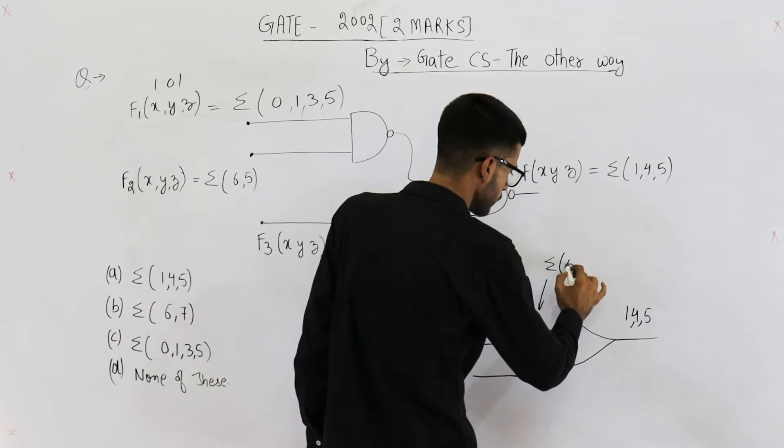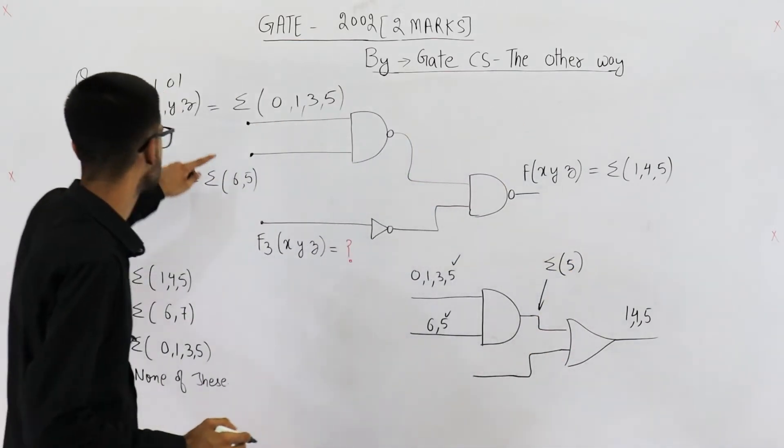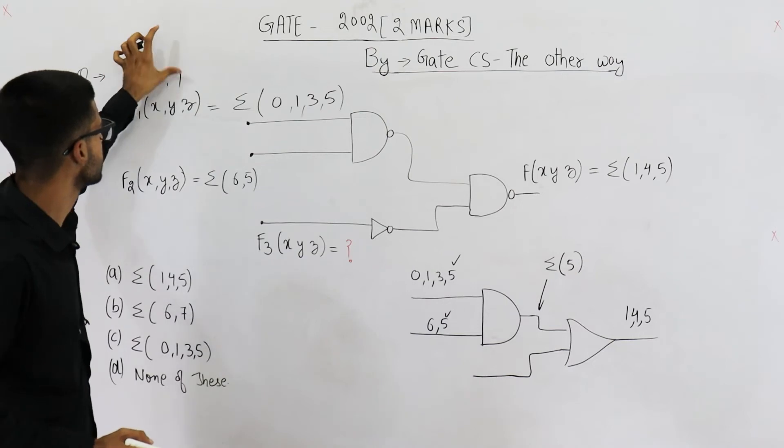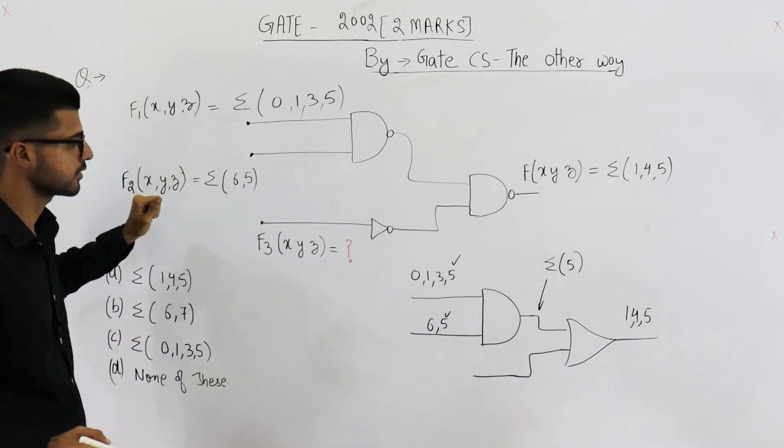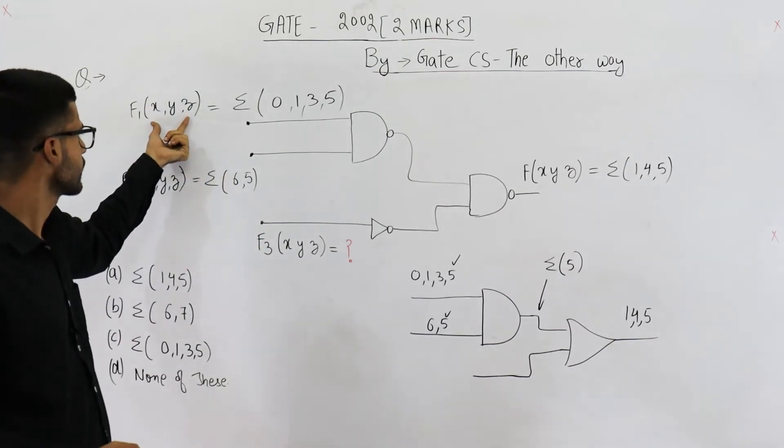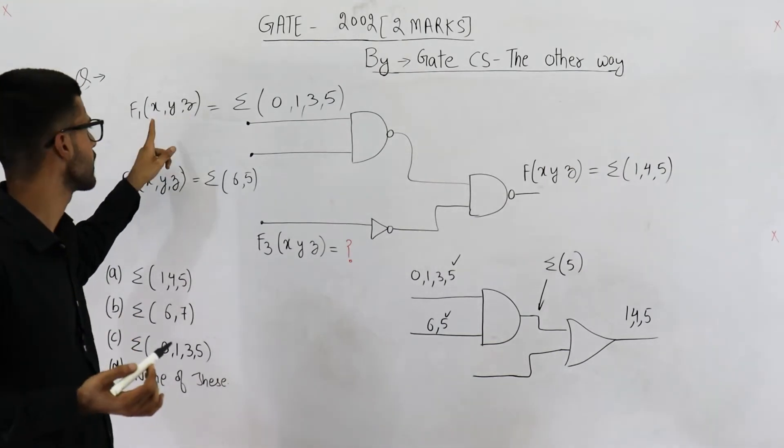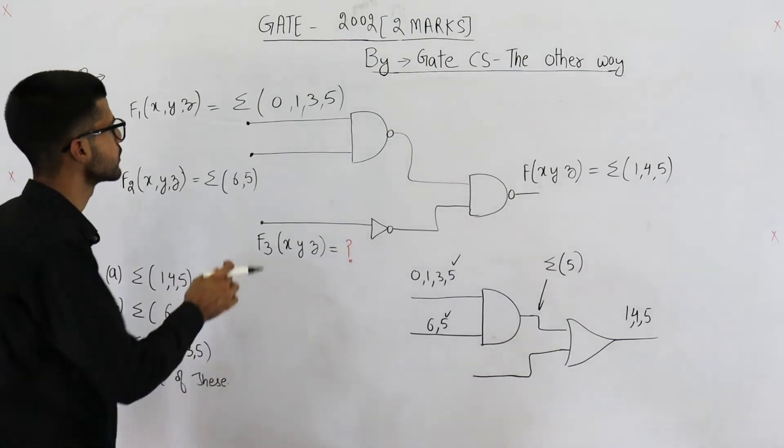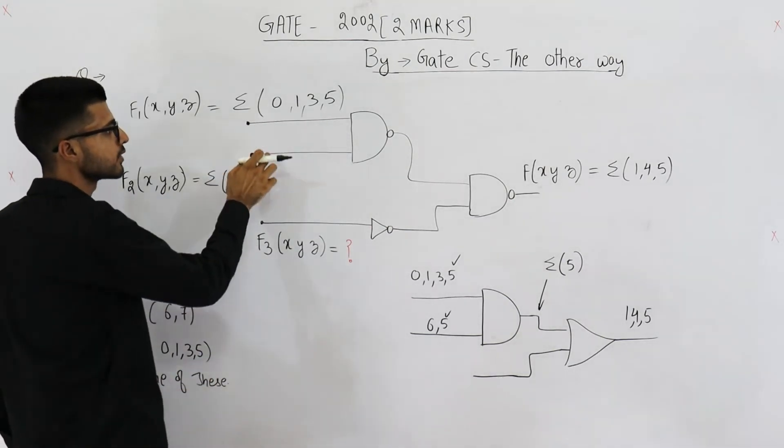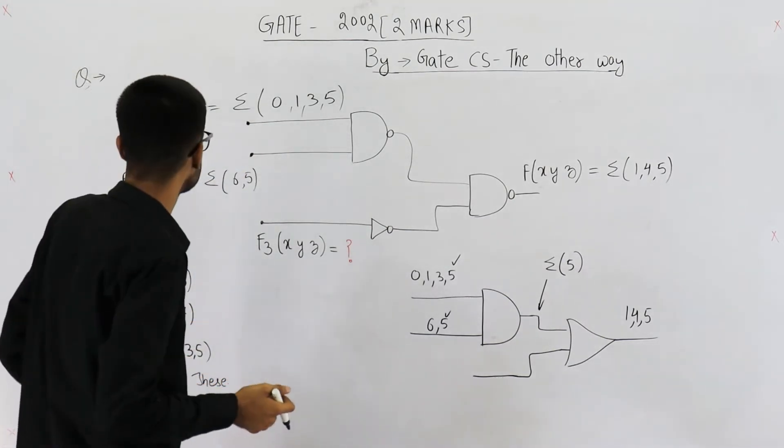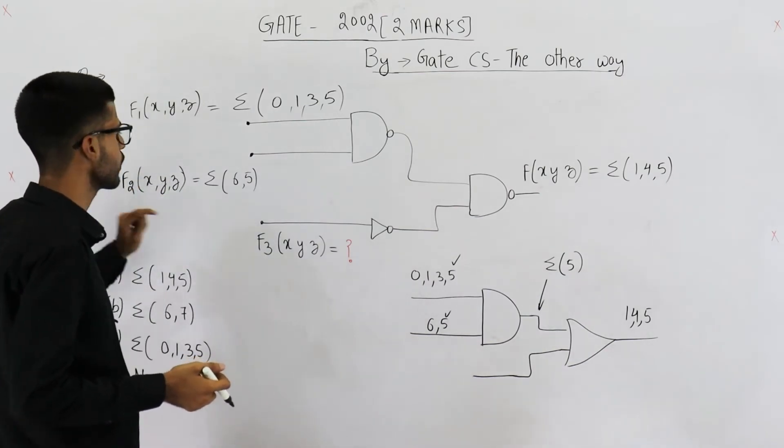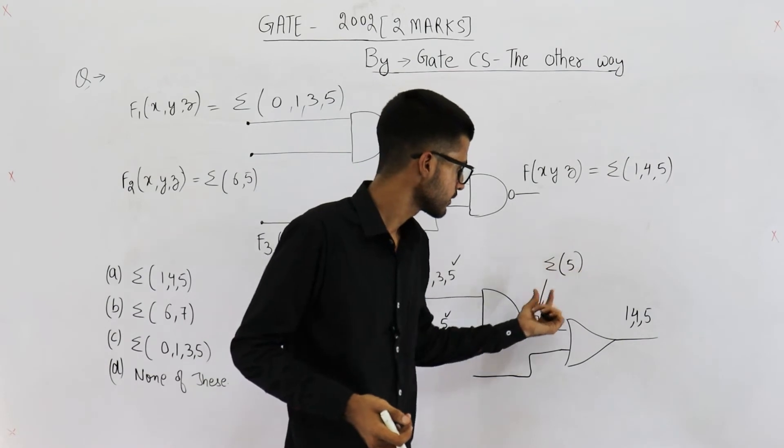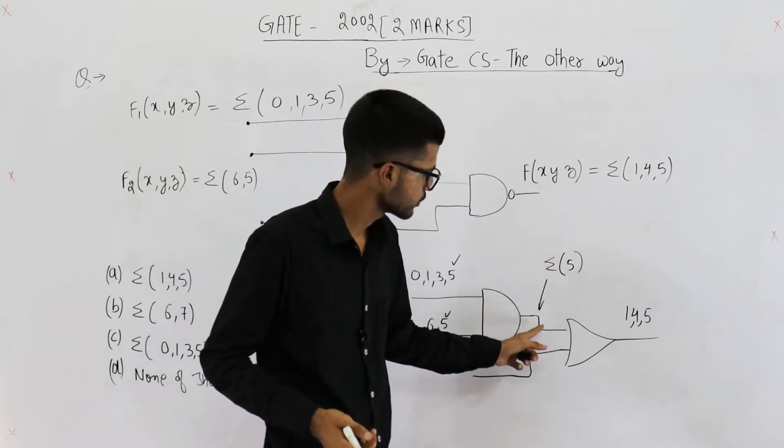That means output of this AND gate will be high only when the input to these functions is five. See, when the values of XYZ are such that the string of XYZ becomes five, that means 101. Only in that specific case both of these wires is going to contain a positive voltage because both f1 and f2 will output a one when input equals five. So this is the function that you are going to get on this wire.